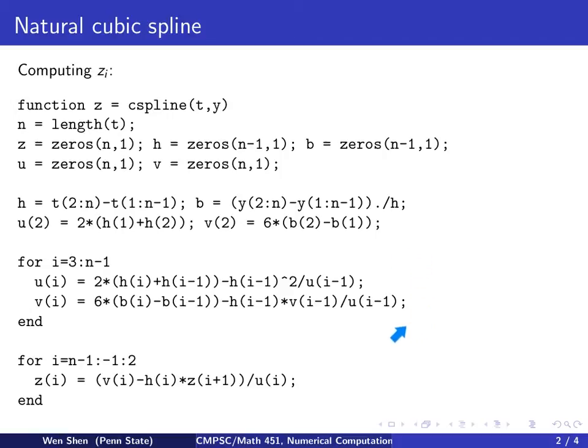So from here to here, actually, is a Gaussian elimination to compute the linear system. This is the forward elimination, and this is the backward substitution. You can leave it there like it is. Later on, we will learn numerical linear algebra, and we'll go into details.